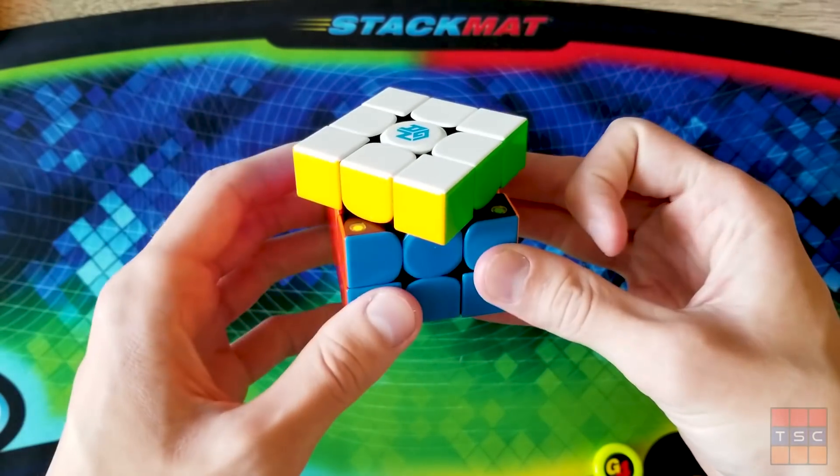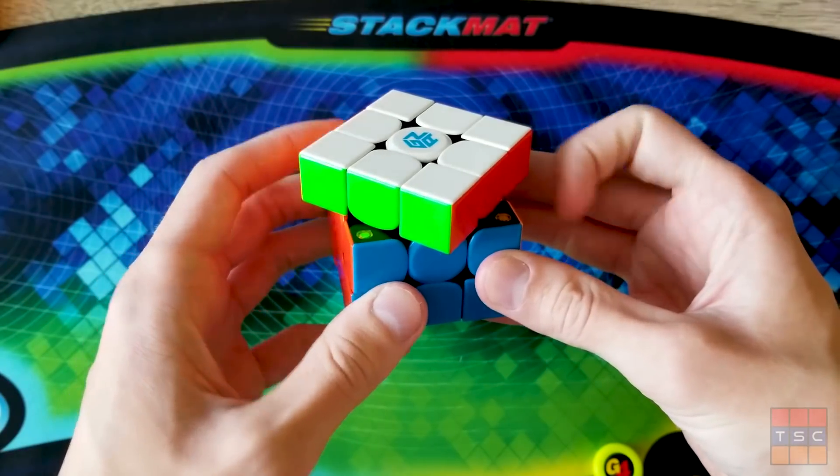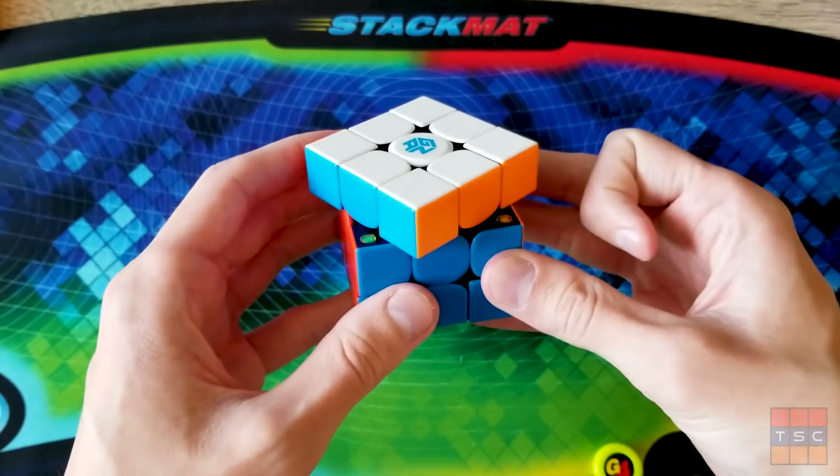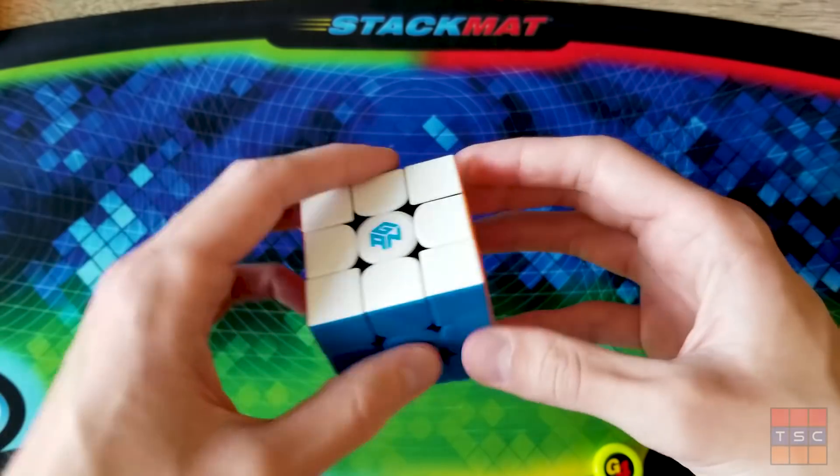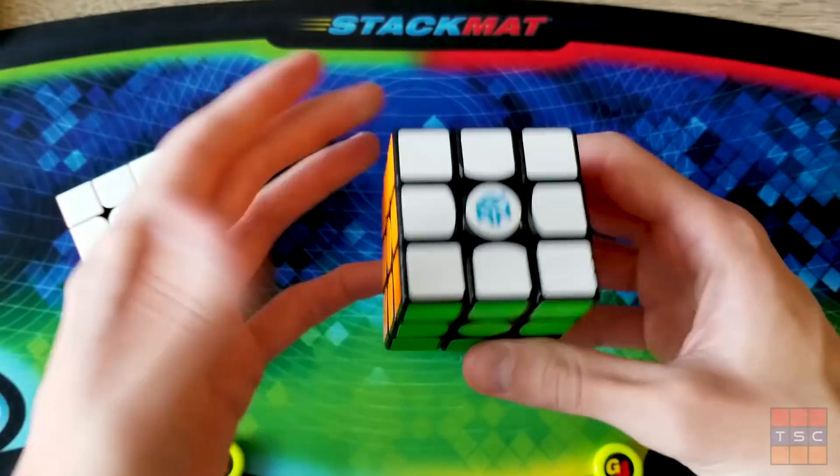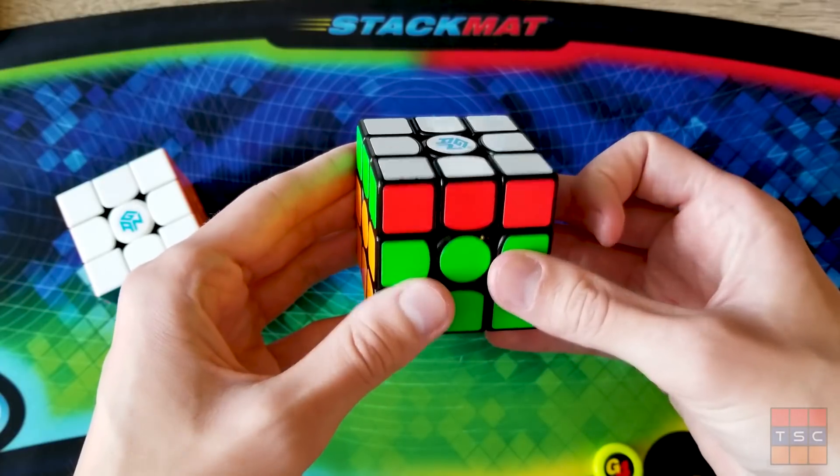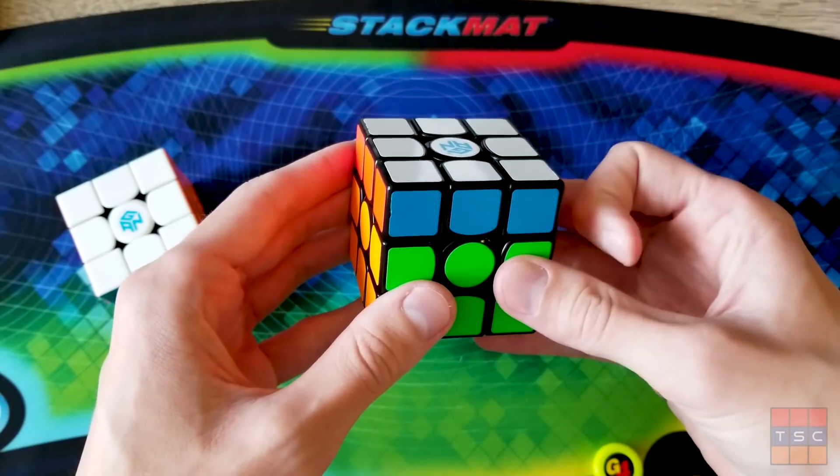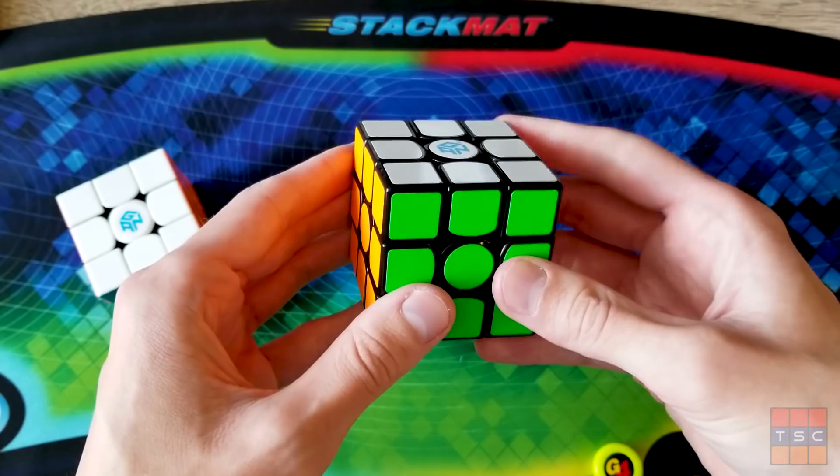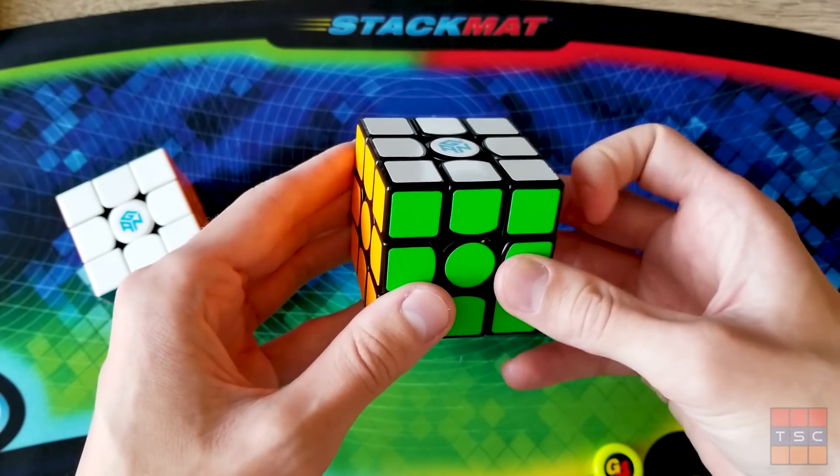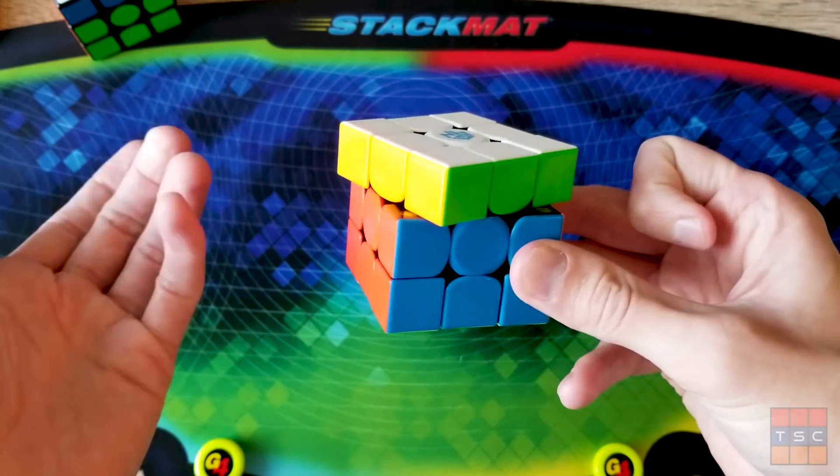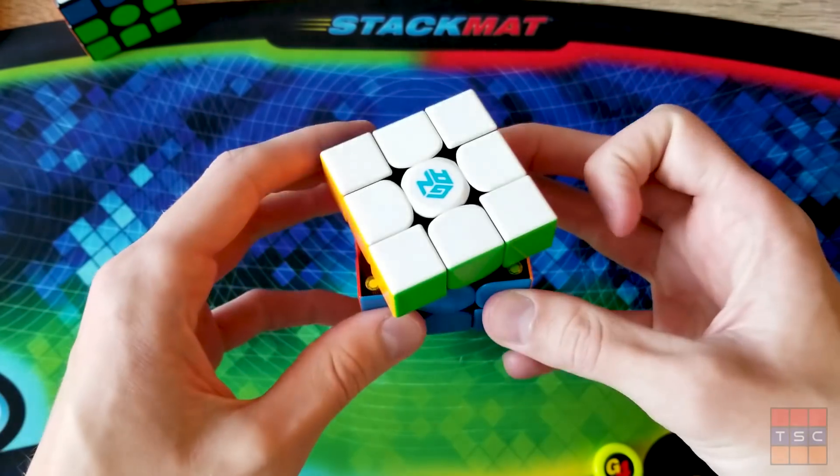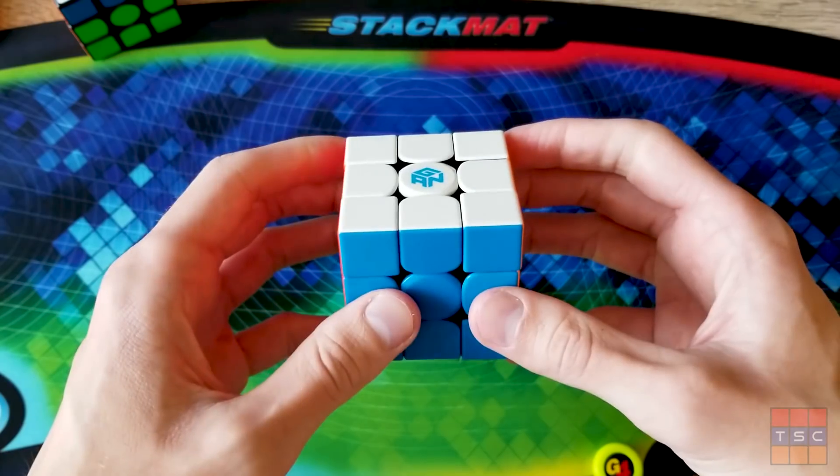It actually almost does a U2 flick, it does one and a half. And that's just way too fast and this is what's causing all my lockups especially with one handed. If I do these exact same flicks on let's say my GAN Air SM you can see it's perfect, it just does one layer turn. There's no problem at all, it doesn't overshoot or anything. But if I do that same strength back on the 354 it almost does a complete U2 flick. And that's just the main problem I have with this cube.